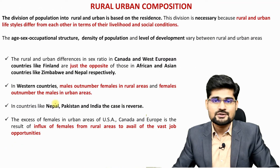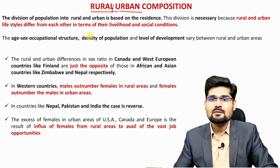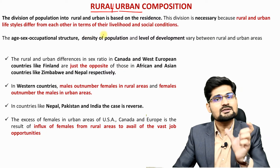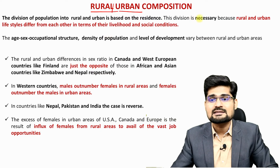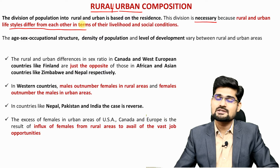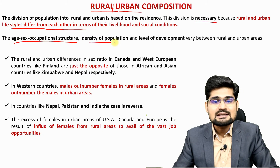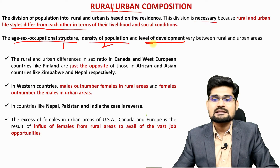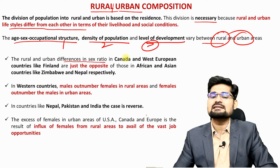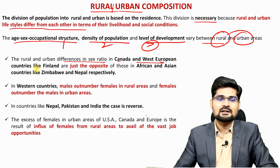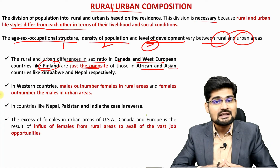Rural-urban composition is another aspect of population composition. Rural and urban lifestyles differ from each other and have different living conditions. Age-sex structure, occupational structure, density of population and level of development are important factors in the rural-urban divide. In Canada and Western European countries like Finland, males outnumber females in rural areas while females outnumber males in urban areas — the opposite of what is observed in Africa and Asian countries.